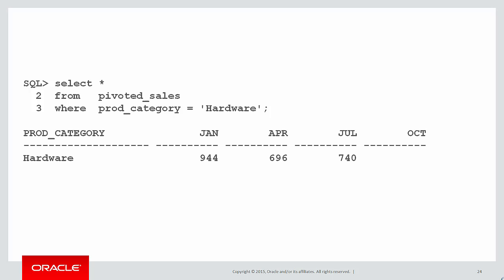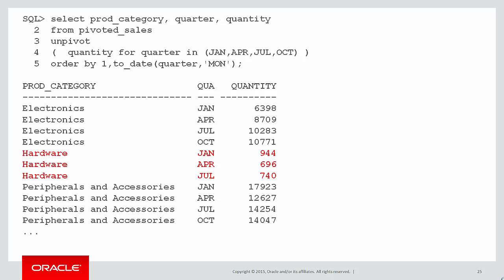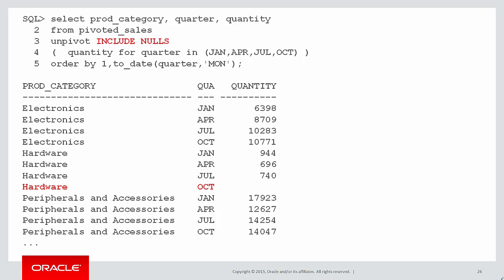Now what about missing data? What if our pivoted_sales table only had data for hardware for January, April and July? We didn't record any data from October through to December so we didn't get any sales. By default when you unpivot that you'll only get three rows — only the rows where there are not null data. You can override that behavior by including the INCLUDE NULLS clause, and then even if there is a null for one of the columns you still get a row. As you can see, the row for hardware for October has been brought into the result set.